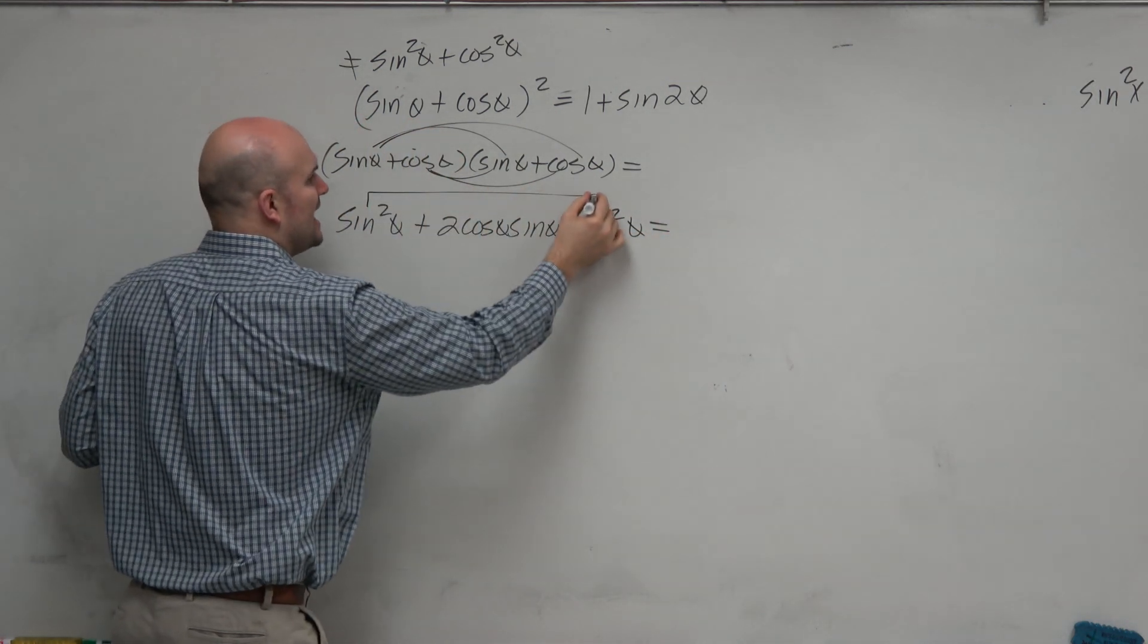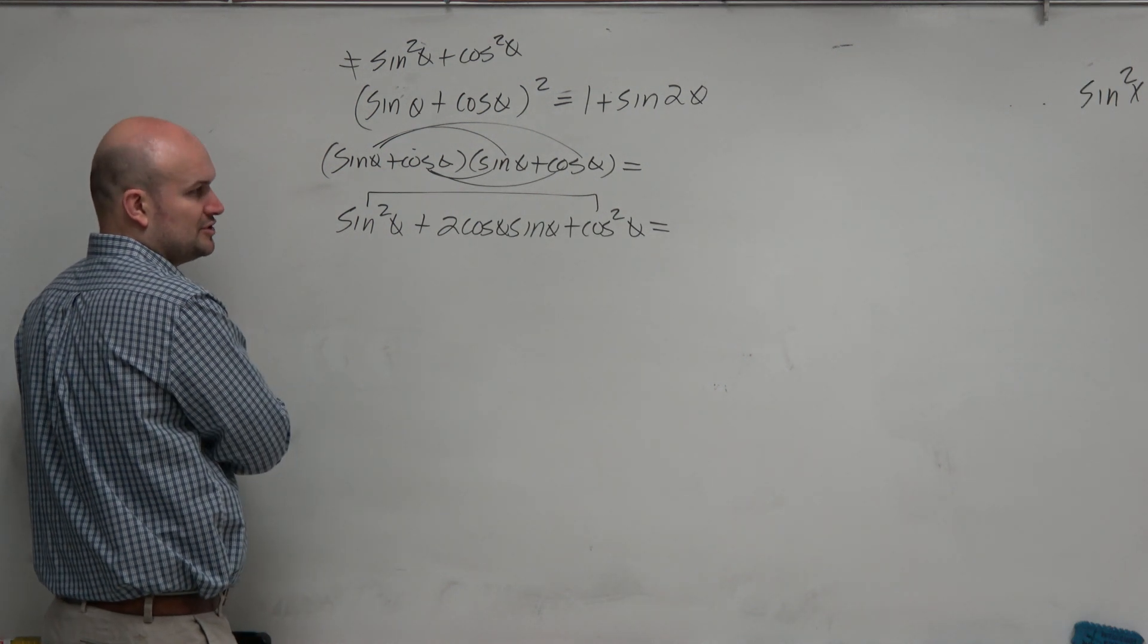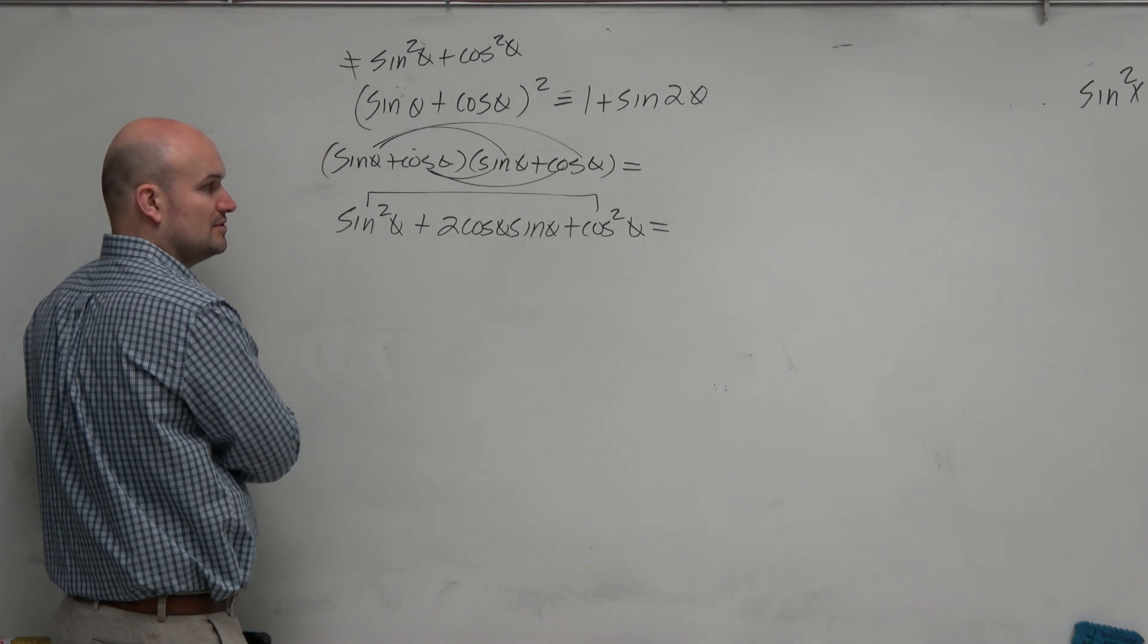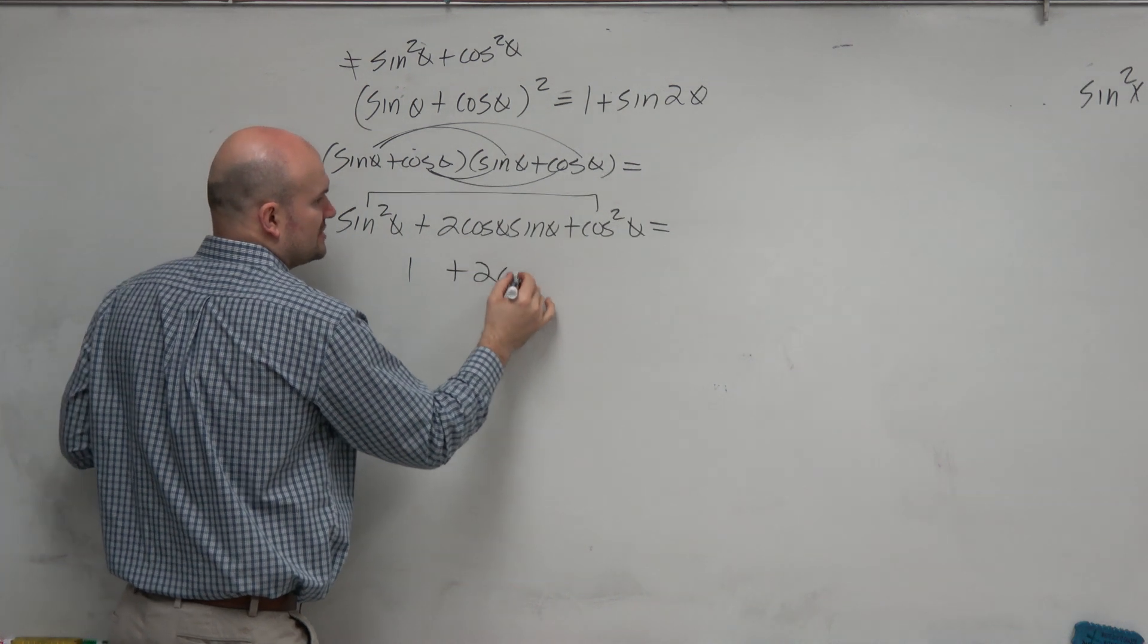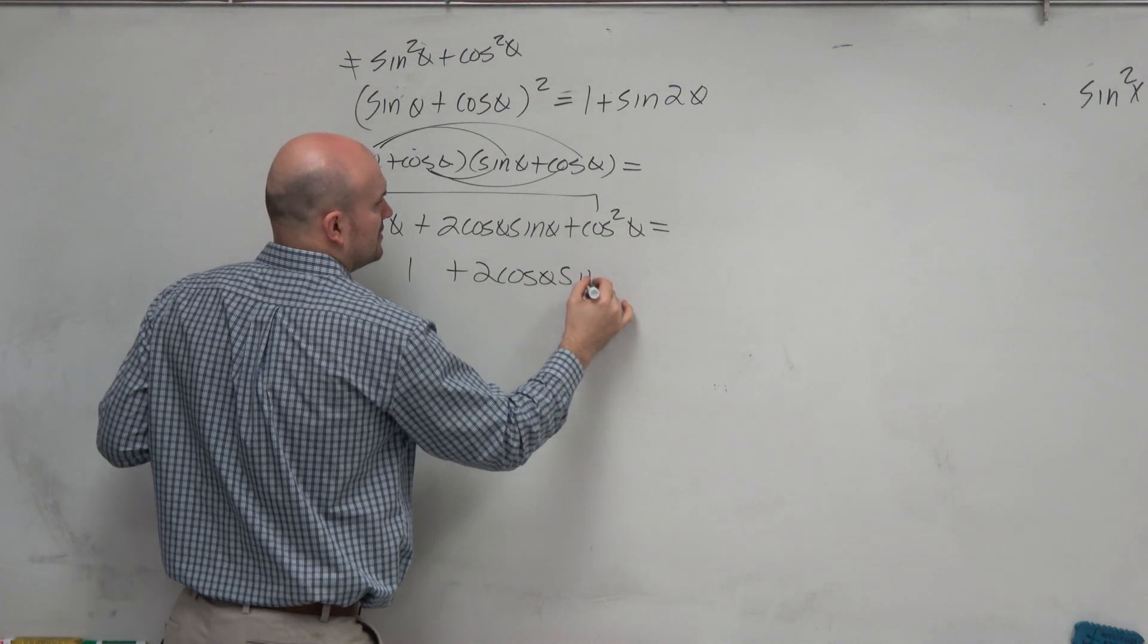Now you guys recognize here? Now we have this Pythagorean relationship, which is sine squared of theta plus cosine squared of theta, which we know is 1 plus 2 cosine of theta sine of theta.